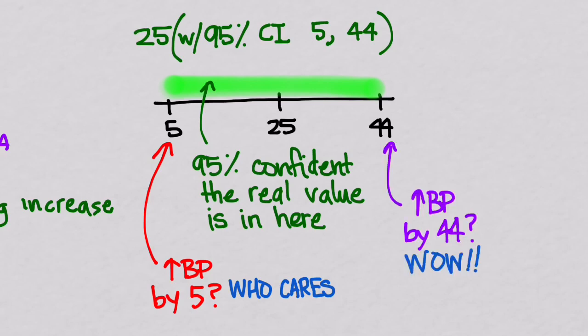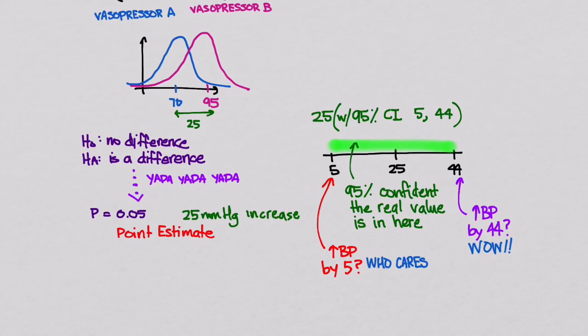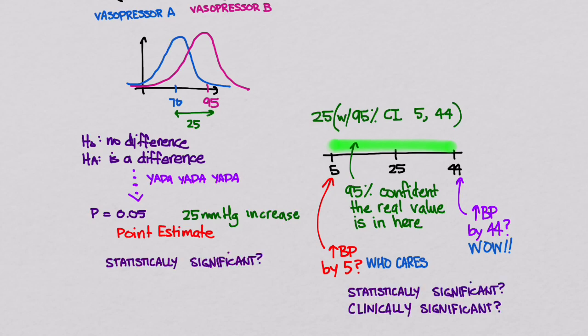It also could have increased the blood pressure by 44, which is a lot — that thing works great. So you can see already that confidence intervals give you an estimate of whether the effect is clinically significant, whereas the point estimate only told you whether it was statistically significant. Confidence intervals give you much more information than just the p-value, including information on the precision of your estimate.